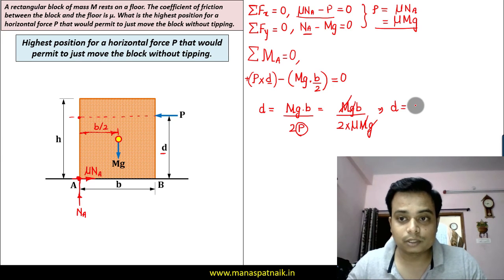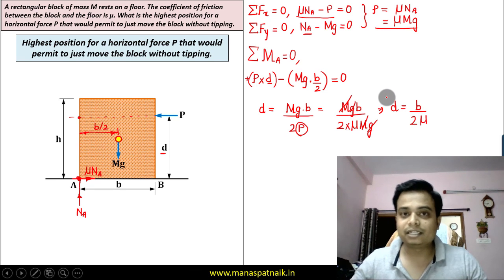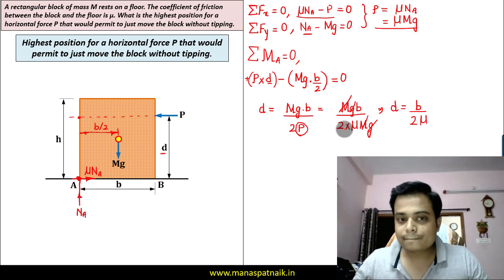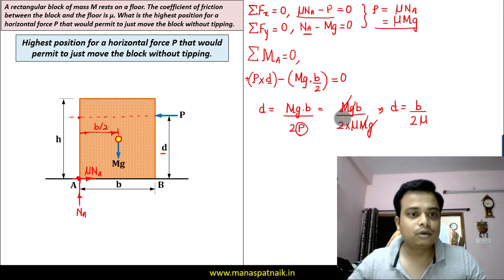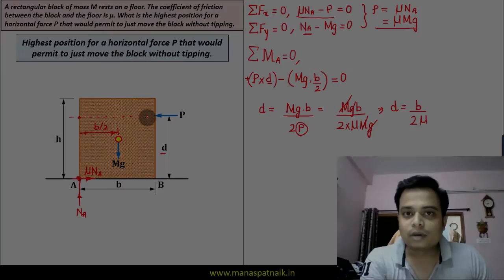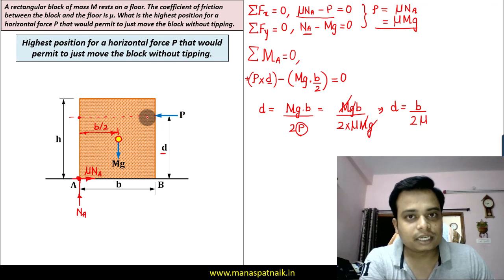D is equal to B over 2μ. Well that's it guys. So this force P should be at a height of B/(2μ) in order to make sure that this block does not tip over. That's it. So guys that was all from my side, thank you for watching. I'll see you in the next video.